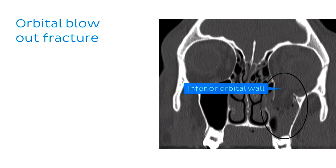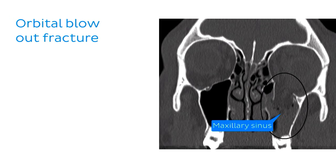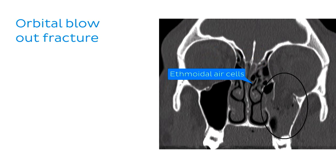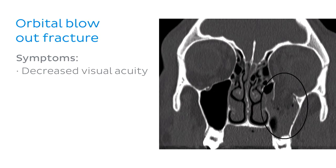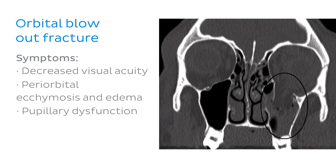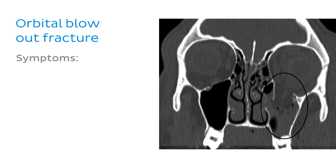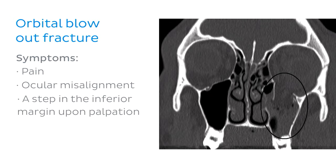In the case of fracture to the inferior orbital wall, orbital fat will prolapse into the underlying maxillary sinus and may be joined by the prolapse of the inferior rectus muscle. Medial wall fractures display a similar pathology, with orbital fat and the medial rectus muscle prolapsing into the ethmoidal air cells. Clinically, the condition presents with decreased visual acuity in the affected eye, periorbital ecchymosis and edema, pupillary dysfunction, pain, ocular misalignment, and a step in the inferior margin upon palpation.